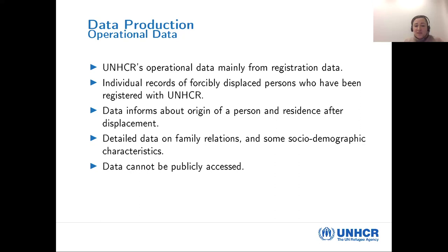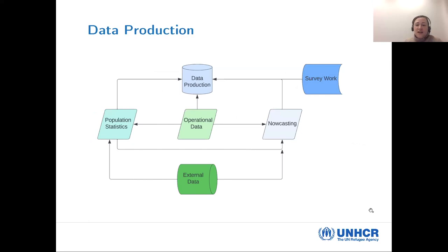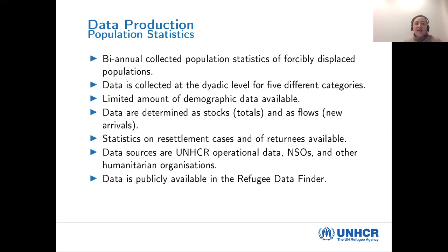All these things inform our programmatic work and form the basis of many of the data products we produce. As I said, the data is very sensitive and obviously cannot be accessed publicly, but we use it internally at UNHCR extensively. We mainly produce three data products on a regular basis: first, the population statistics; second, we have an extensive amount of survey work; and third, a new product called nowcasting.